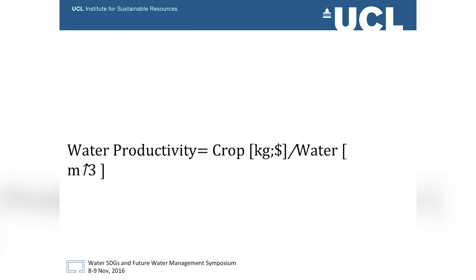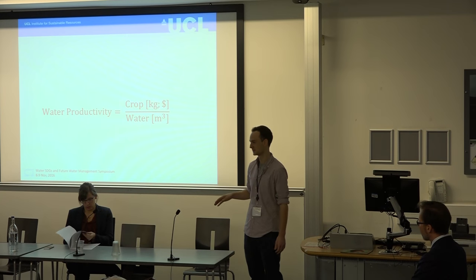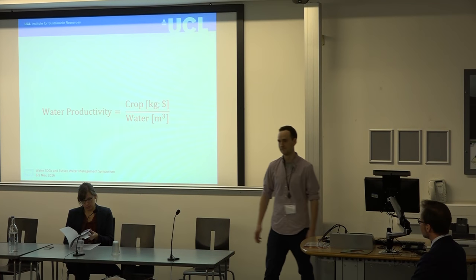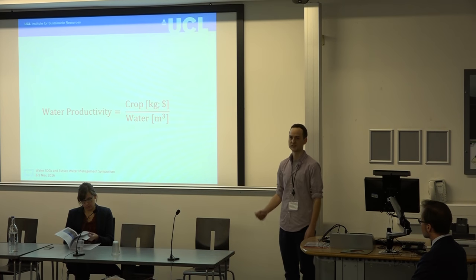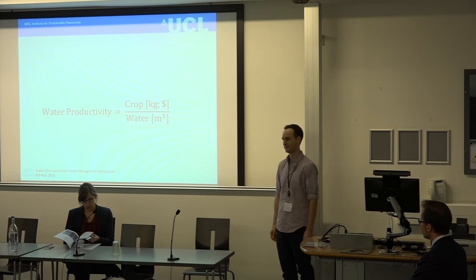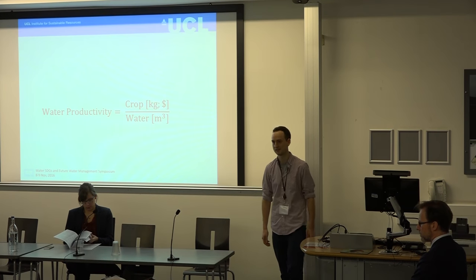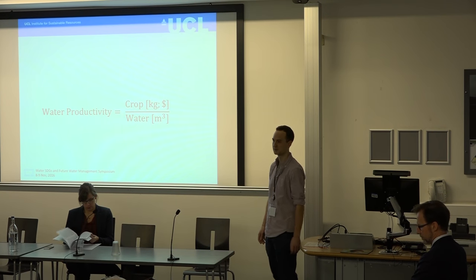This relation is also expressed in the water productivity coefficient, which is a coefficient expressing the amount or the value of a crop per amount of water used to produce that crop. This coefficient is often used to evaluate the sustainability of water use.